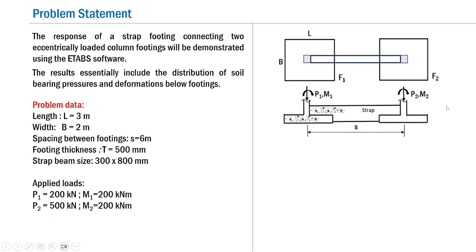The problem analyzed consists of two footings of the same size — length L and width B — where in each case the column is subjected to both an axial load and a moment, meaning both footings are eccentrically loaded. Both footings are connected by a rigid strap.